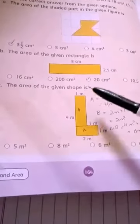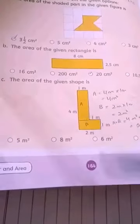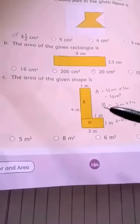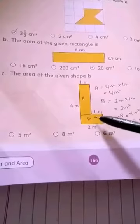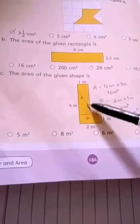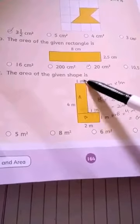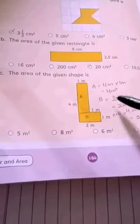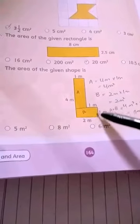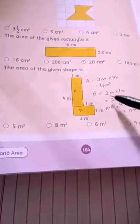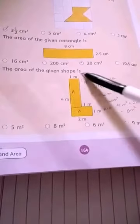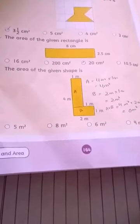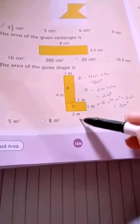Part C: the area of the given composite shape. We divide it into two parts — Part A and Part B. Part A has a length of 4 m, giving an area of 4 m square. Part B has dimensions of 2 m by 1 m, giving 2 m square. Adding them: 4 m square plus 2 m square equals 6 m square. The correct answer is 6 m square.